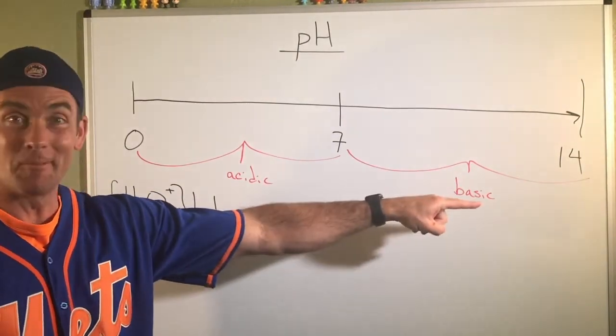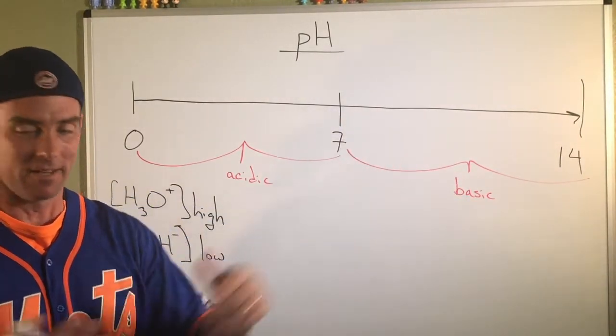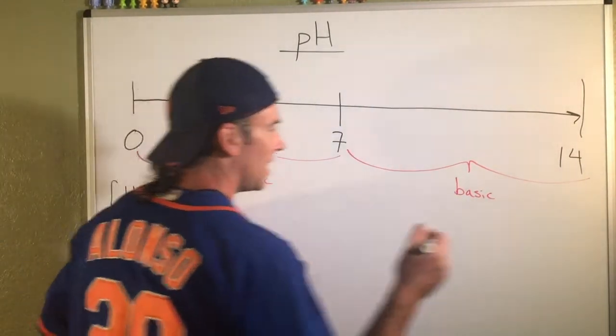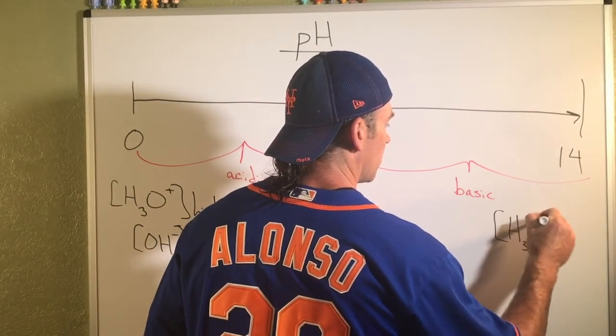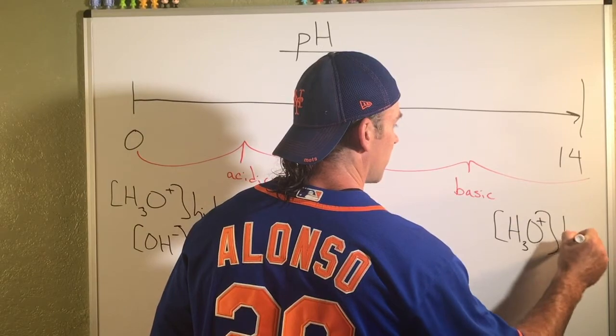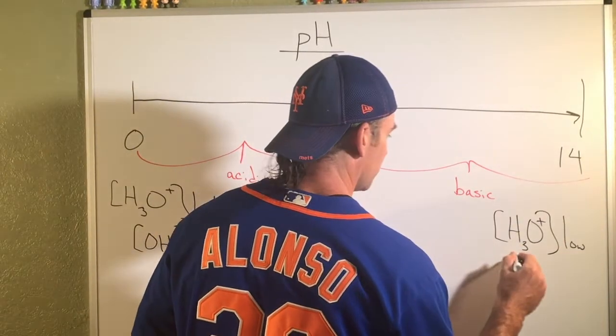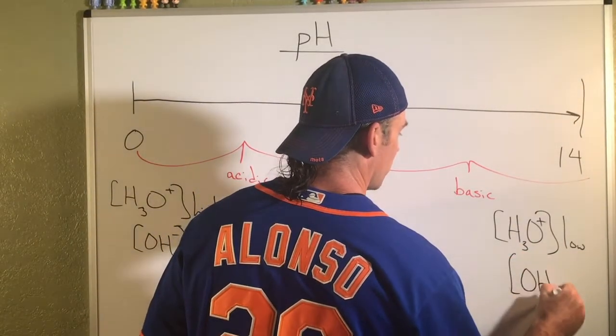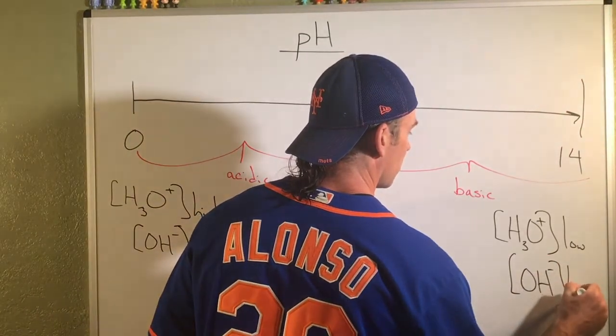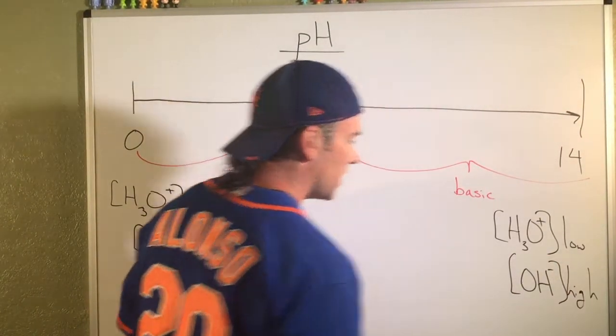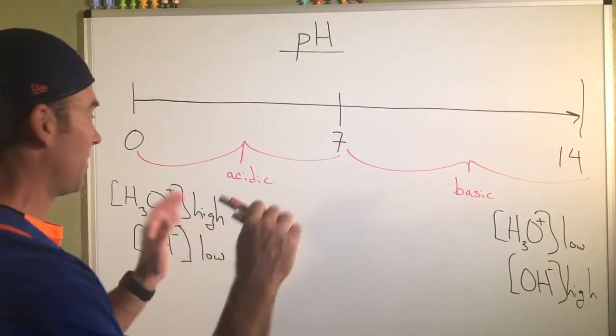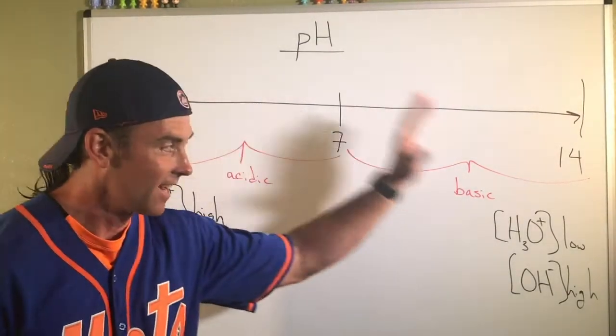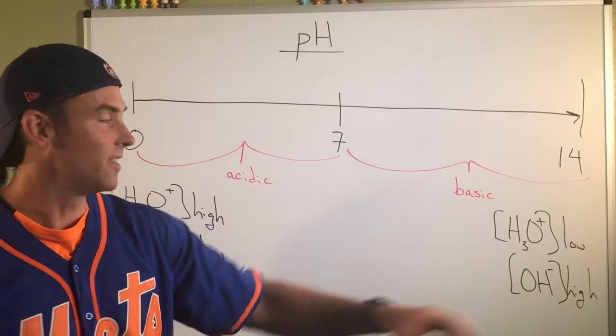And then the other thing, the basic side is the exact opposite. So we're going to say that over on this side, H3O+ has a low concentration. And over here, the hydroxide concentration is high. It's the yin and yang. If it's the opposite of this is over on the 14 end of the scale here.